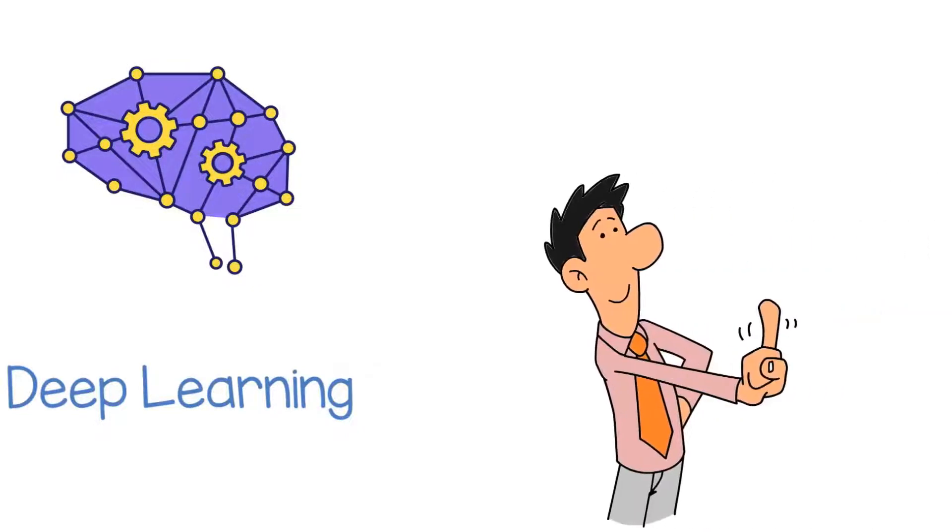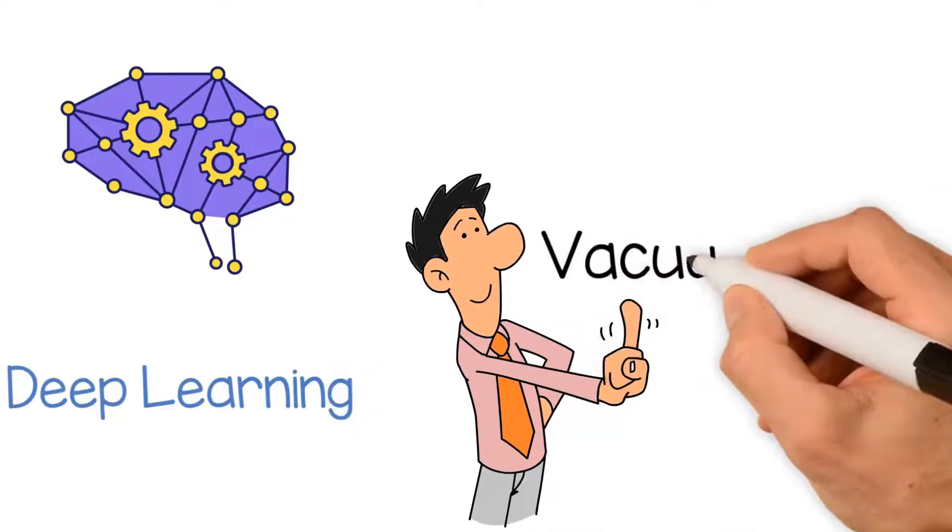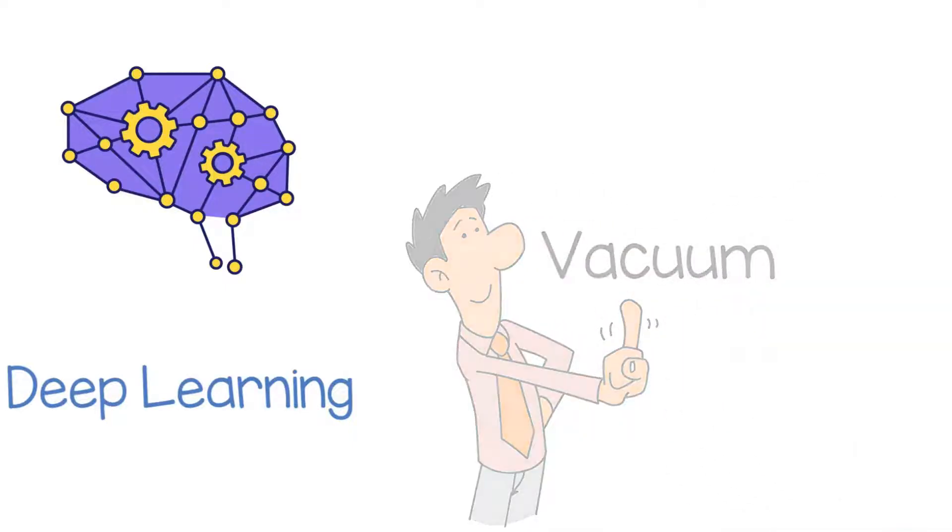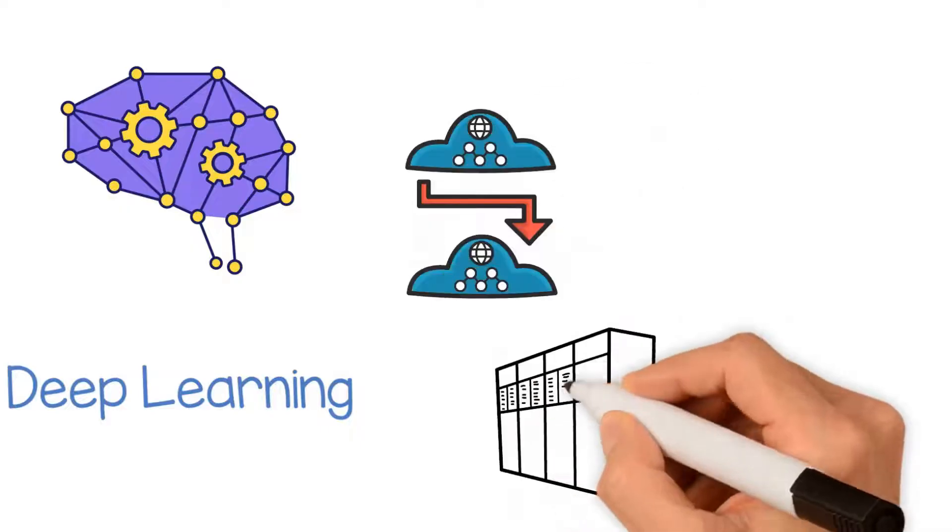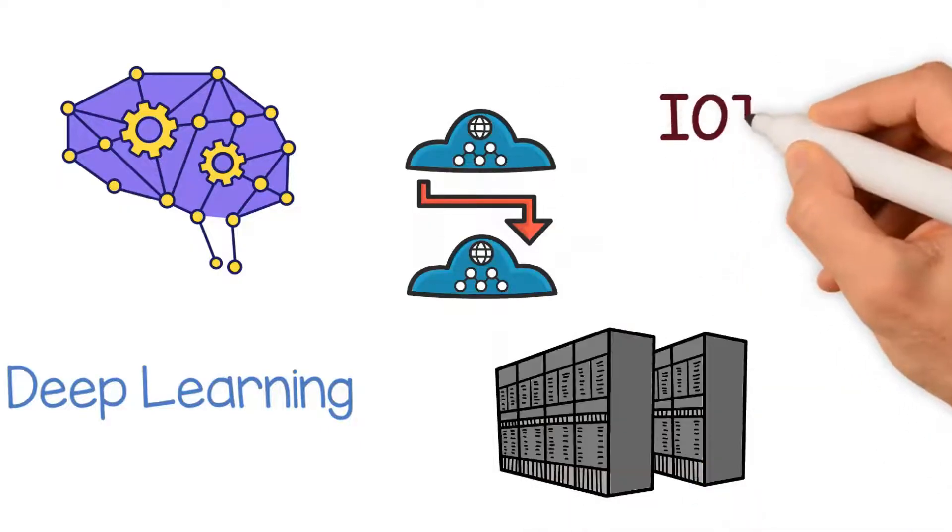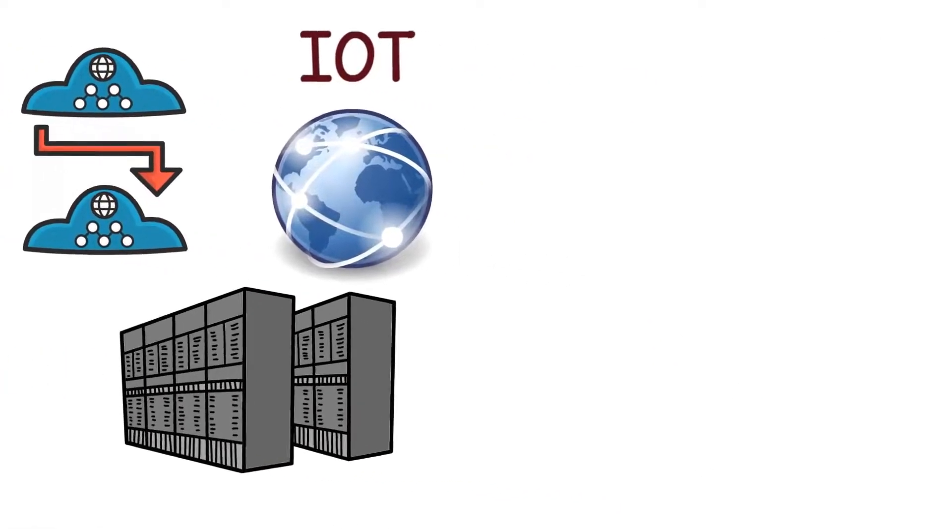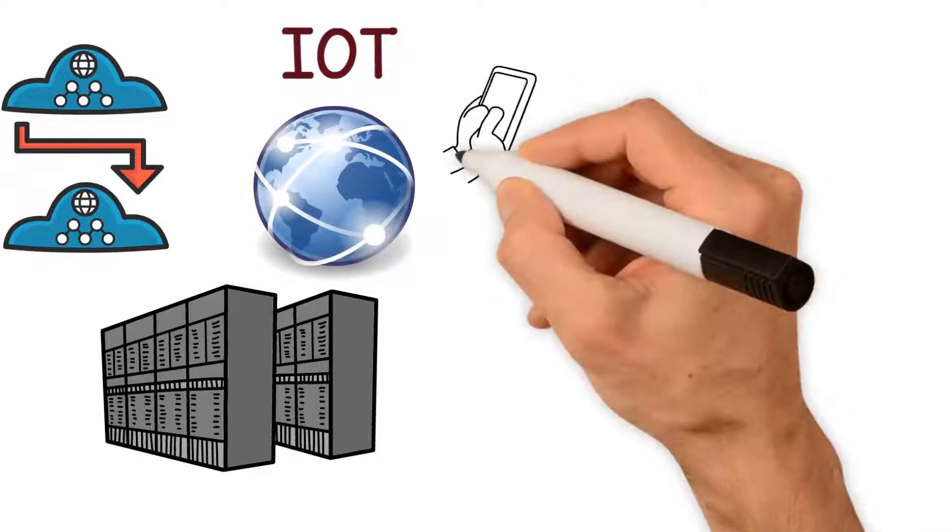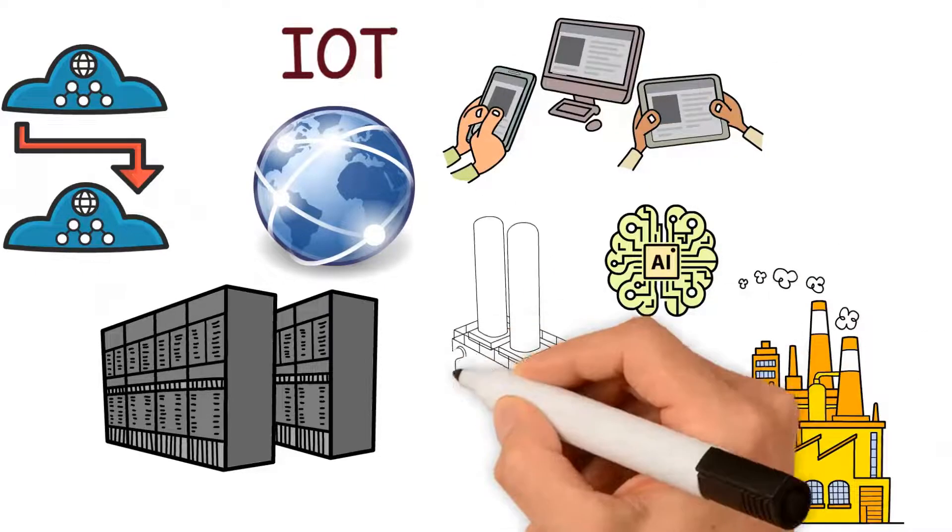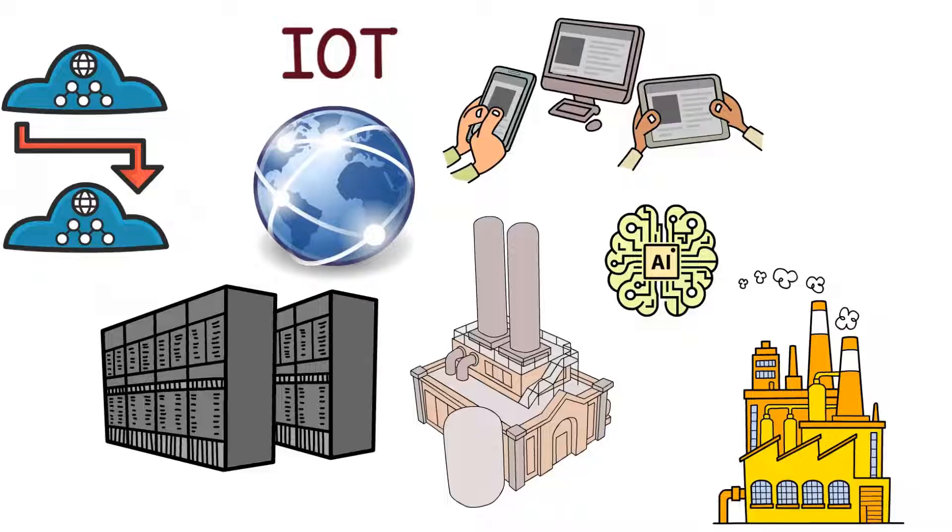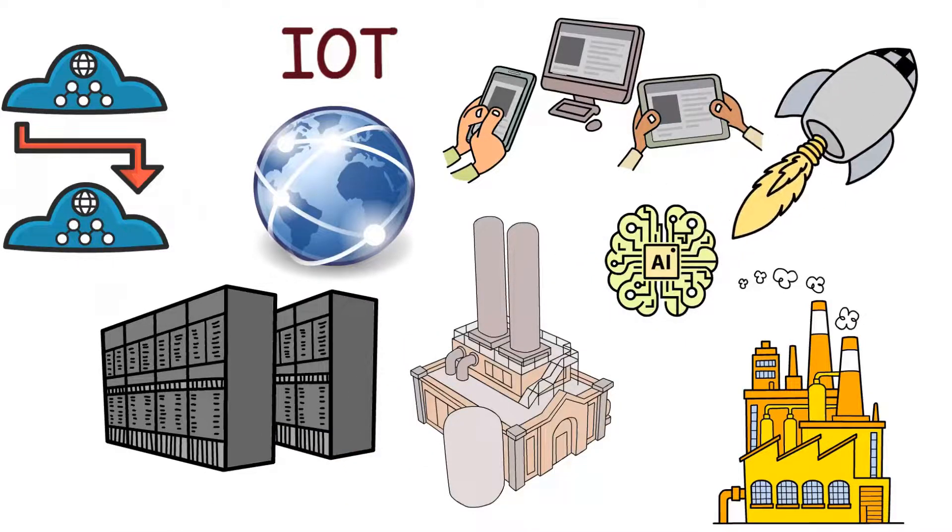It's also important to note that AI does not exist in a vacuum. It's heavily intertwined with other technologies such as cloud computing, big data, and the Internet of Things. These technologies enable AI to be applied to a wide range of applications and industries, and they also enable AI to improve and evolve at a rapid pace.